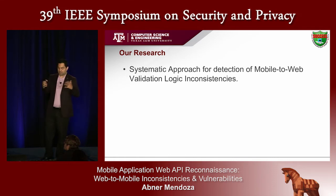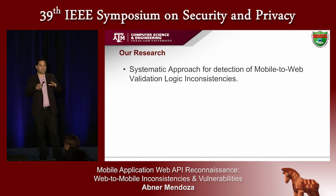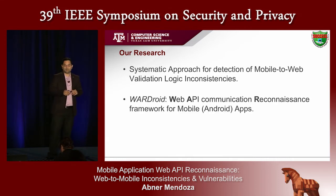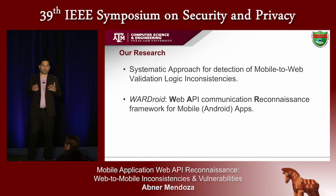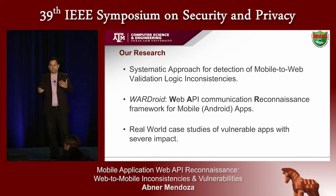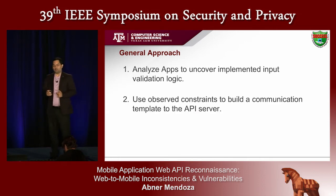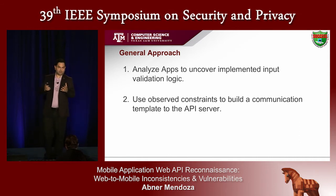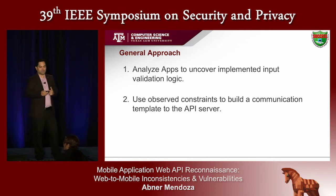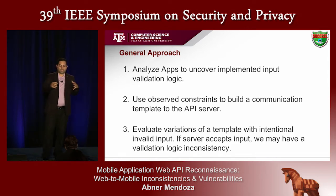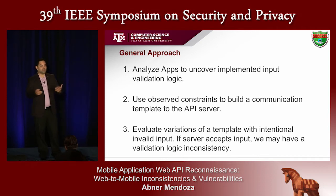In our research, we take a systematic approach for detecting these types of mobile-to-web validation inconsistencies. We implement the system we call Wardroid — a Web API communication Reconnaissance framework for Droid mobile applications, specifically implemented for Android. We then highlight some real-world case studies of vulnerable apps with fairly severe impact. Our general approach is: first, analyze the apps to uncover the logic just as an attacker would; use the observed constraints to build communication templates — HTTP request templates — that the app uses to communicate with the API server; then evaluate variations of the template with intentional invalid input. If the server accepts the input, we flag that app for further manual investigation.